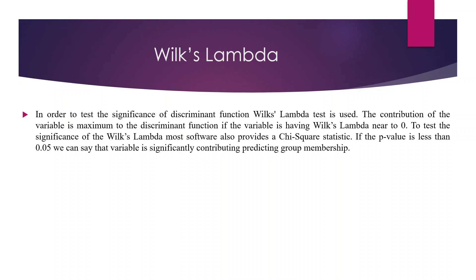The algorithm computes Wilks' Lambda statistics. The ideal value should be equal to zero, meaning variables whose Wilks' Lambda is equal to zero are significantly contributing in discriminating the groups. The software calculates the p-value for each variable. If the p-value is less than 0.05, we can say that variable is significantly contributing towards predicting group membership.